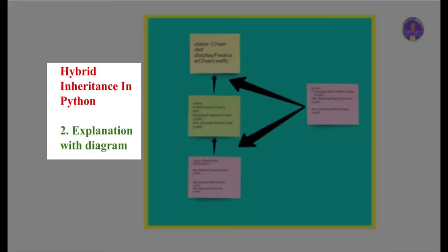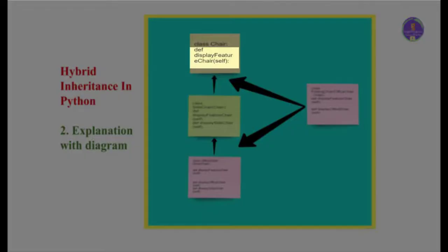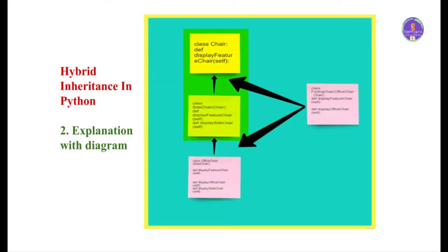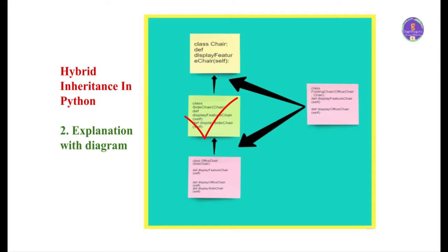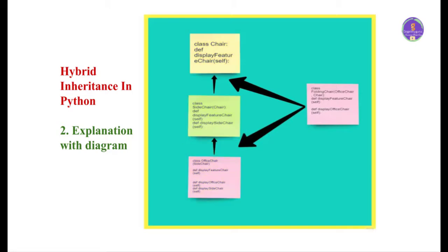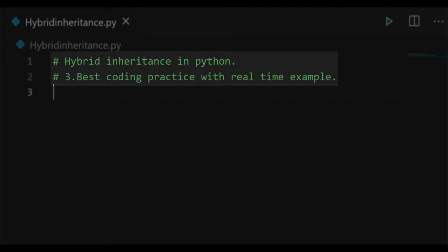The second topic is explanation with a diagram for hybrid inheritance. In this diagram, class chair is the base class with a method called display feature chair. Class side chair is derived from chair class with a method display side chair, and it inherits the properties of chair. Class office chair is derived from side chair with a method display office chair, inheriting properties of both side chair and chair. The last class is folding chair, derived from office chair and chair, which includes methods from all classes. We need to create an object for only the folding chair class.